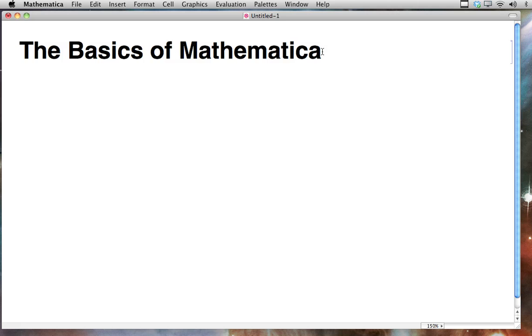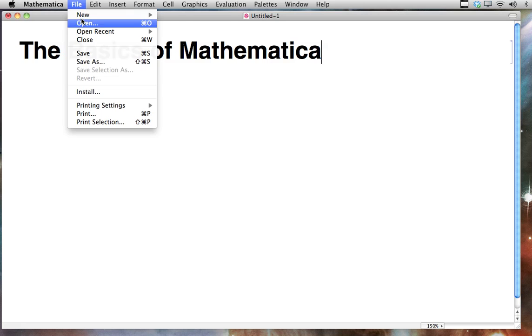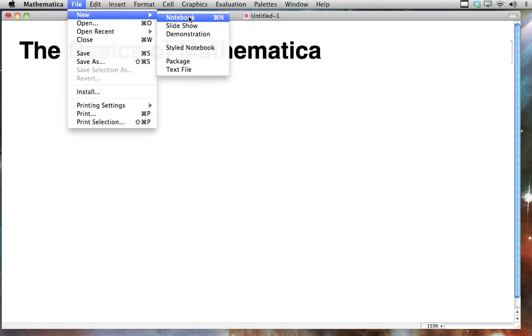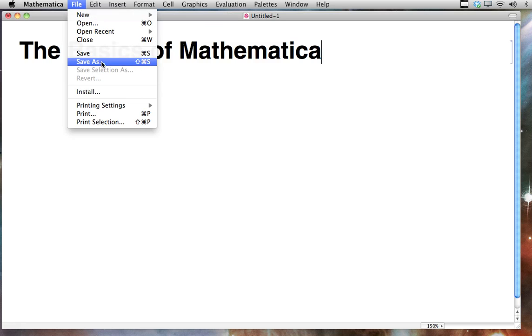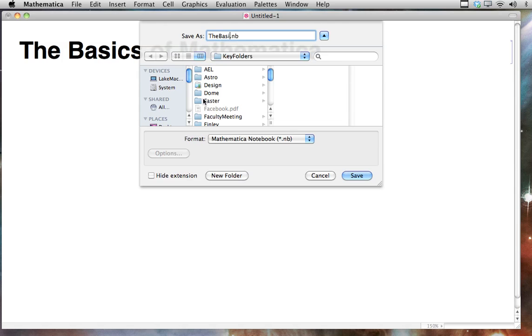Mathematica files are called notebooks, and you can see if I went up to make a new one, that's what it would say. In fact, if I save this file, I'll call it the basics, you'll notice that the extension is .nb, stands for notebook file.